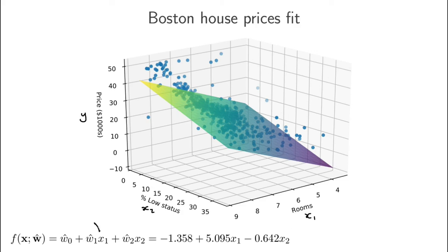Let's just write this here. So this is rooms and this is percentage low status. And this surface here is described by this equation. The optimal settings I found in Python for w0, for w1, and for w2 are these numbers.